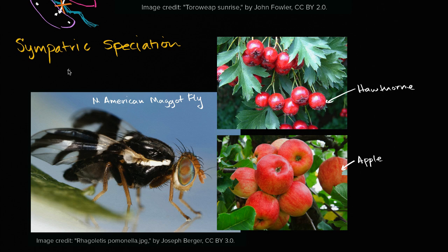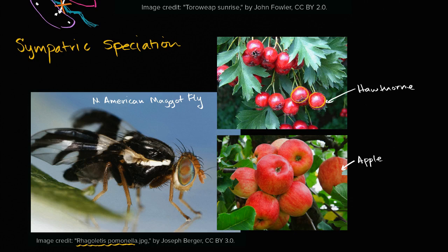There's an example that people believe is sympatric speciation happening before our eyes. This species — the technical term Rhagoletis pomonella, though I know I'm mispronouncing it — is native to North America. Before European settlers brought apples to North America, they hung out, laid their eggs, and their maggots grew inside the hawthorn fruit. So they would go to hawthorn trees, lay their eggs there, and their young would consume the hawthorn fruit. But once European settlers introduced apples into North America, a certain subgroup of Rhagoletis pomonella started to leverage the apples, laying their eggs so their maggots would grow inside the apples.